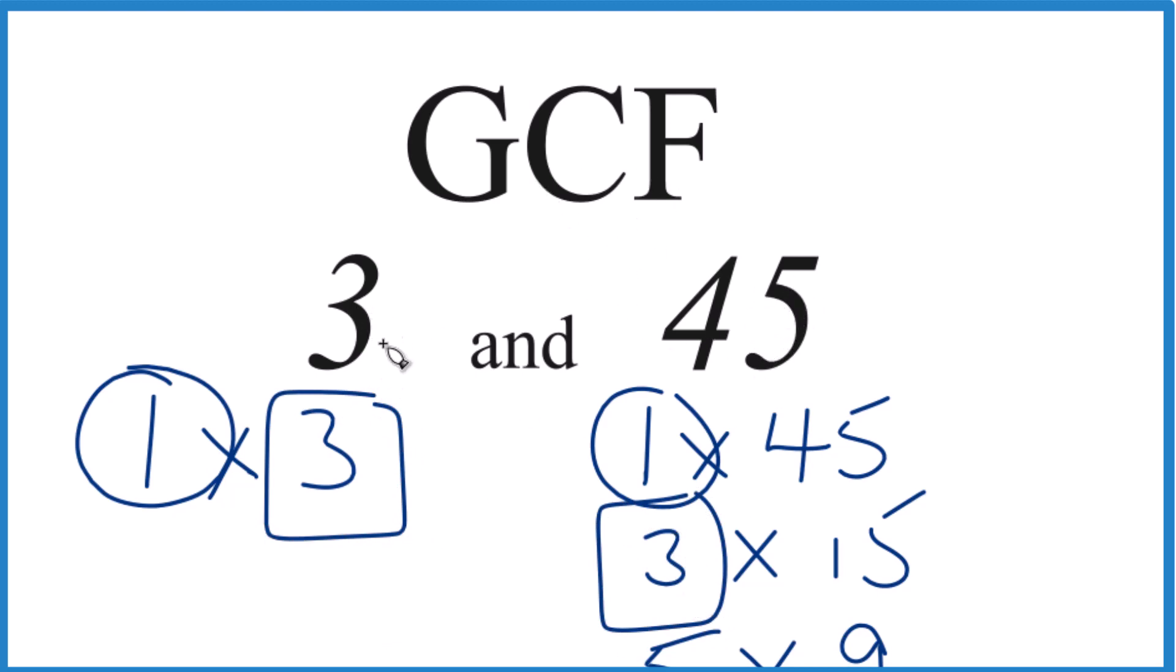So in answer to our question, the GCF for 3 and 45, that's just 3. There are other ways you could do this, like prime factorization, but with numbers that are this size, this is a pretty good way to do it. This is Dr. V, thanks for watching.